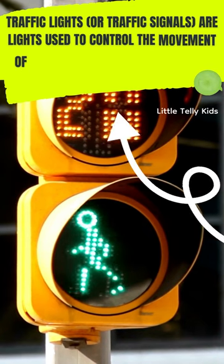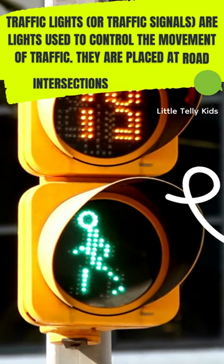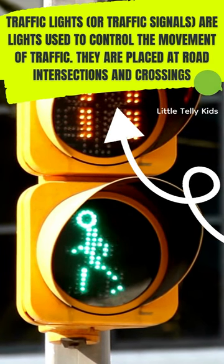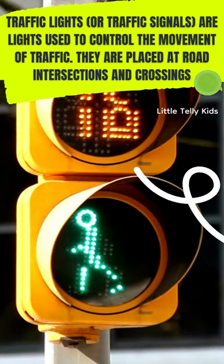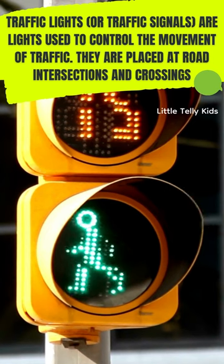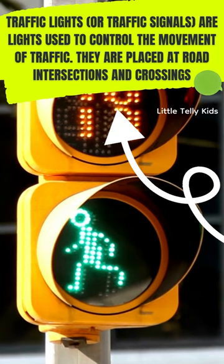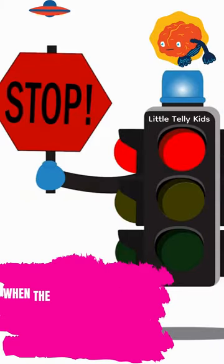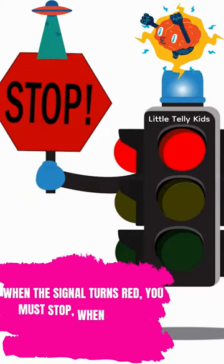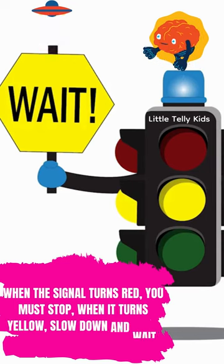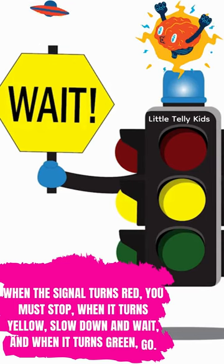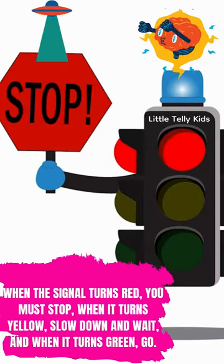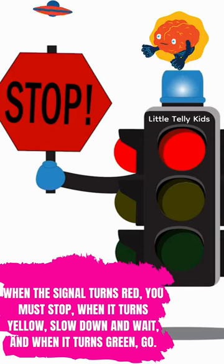Traffic lights or traffic signals are lights used to control the movement of traffic. They are placed at road intersections and crossings. When the signal turns red, you must stop. When it turns yellow, slow down and wait. And when it turns green, go!